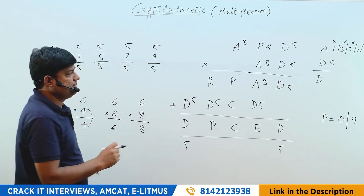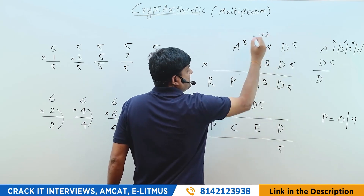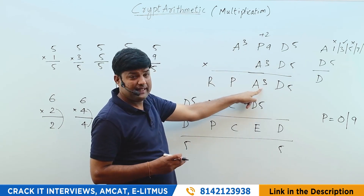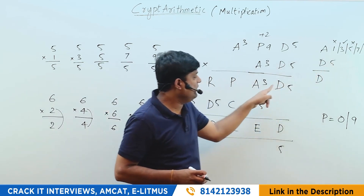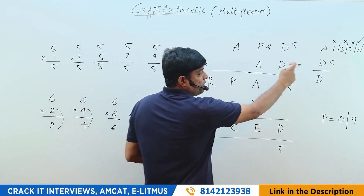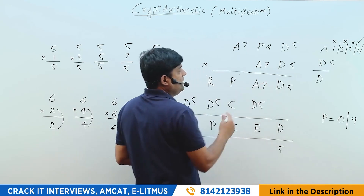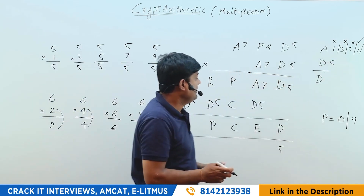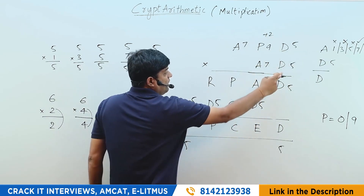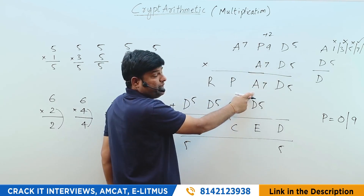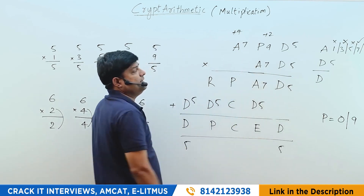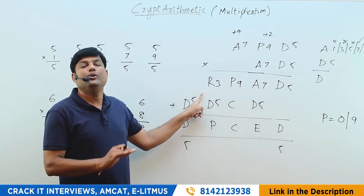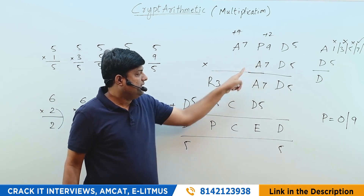With P=9: 5×5=25, write 5 carry 2. Then 5×9=45, plus 2 carry equals 47 — we need A=7 here, but we currently have A=3 which doesn't match. So A=3 is not possible. Let's try A=7. With A=7 and P=9: 5×5=25, write 5 carry 2. 5×9=45, plus 2 = 47 — write 7, carry 4. 5×7=35, plus 4 = 39 — write 9 carry 3. P=9 matches perfectly!